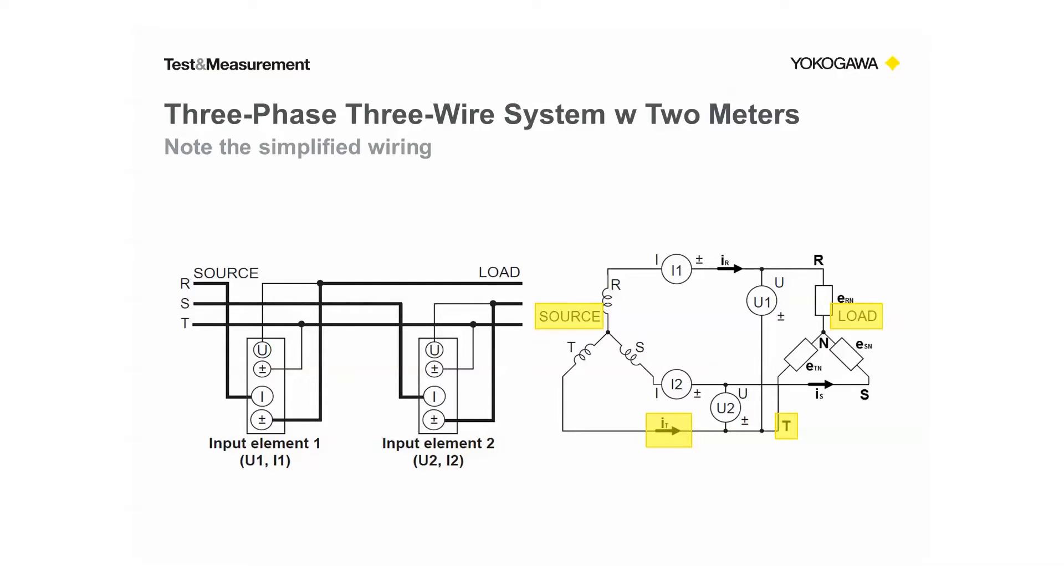It is not ground, but we do use it as a common reference point for both of the voltmeters. That is how simple the two wattmeter method schematic really is.